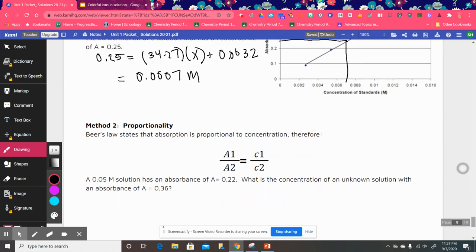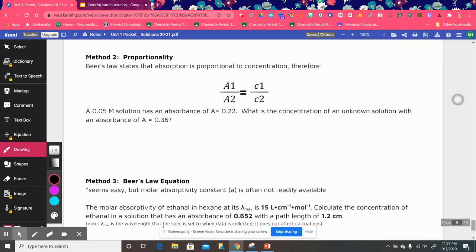So let's go down here to proportionality, another method. Beer's law states that absorption is proportional to concentration. So you can set this up as a proportion. So a1 over a2 equals the concentration of solution one over the concentration of solution two.